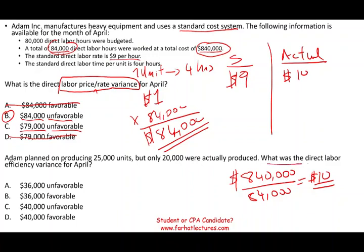The second question asks: what is the direct labor efficiency variance for April? Efficiency means quantity — did they spend more hours or less hours on this job? They budgeted 80,000 hours and actually worked 84,000 hours, so it is going to be unfavorable. You can immediately eliminate the favorable answer choices.